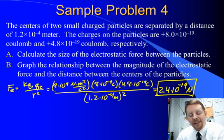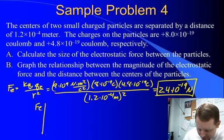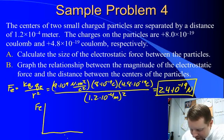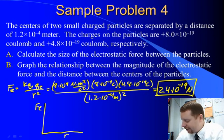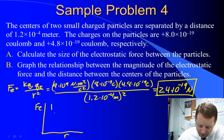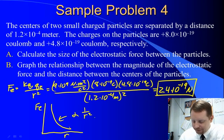Next, we're asked to graph the relationship between the magnitude of the electrostatic force and the distance between the centers of the particles. So that'll be the electrostatic force on our y-axis and the distance between them, R, on our x-axis. And we know since this is an inverse square law, it'll have that shape where it's proportional to 1 over R squared.